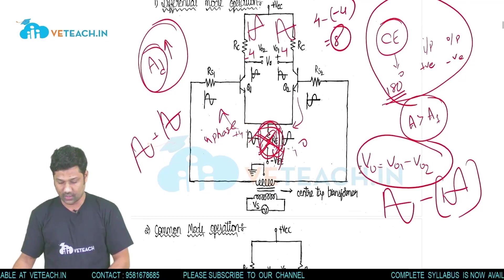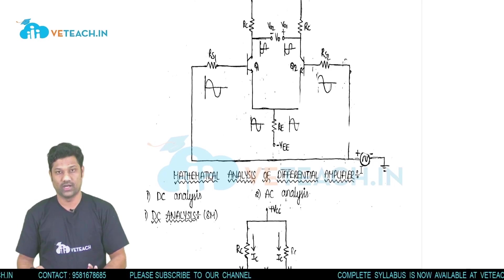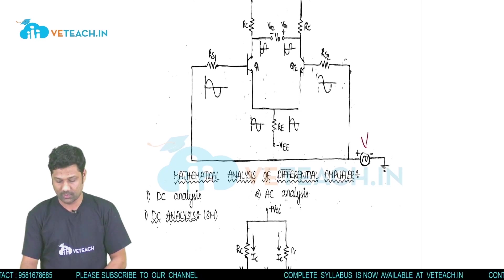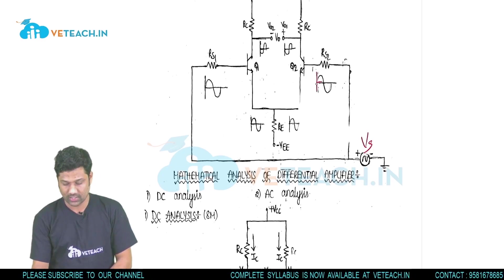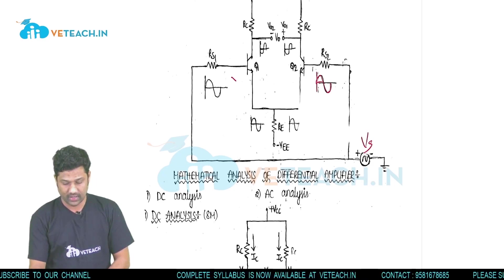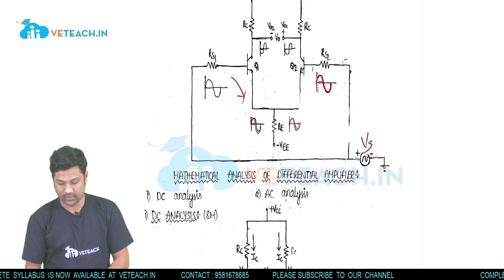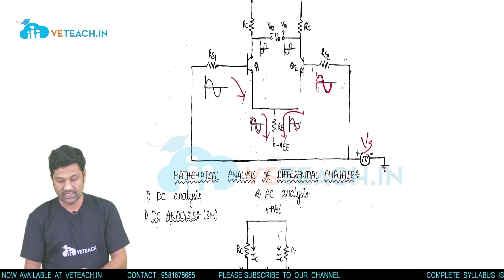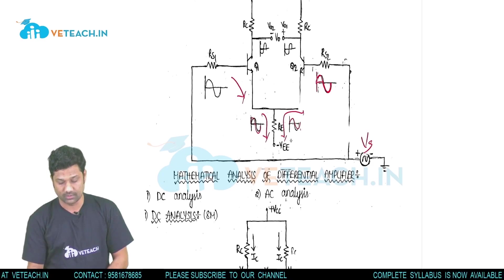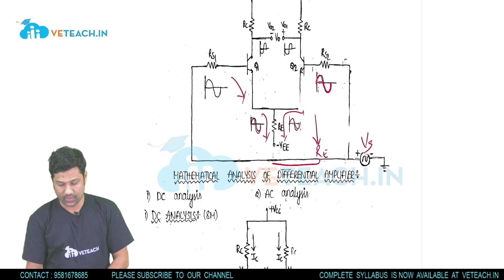Now for common mode operation: we provide the same input to both transistors, so the same positive-negative going signal Vs is applied to both. When we look at RE, there is no phase shift between base and emitter, so both emitters see the same positive-negative going signal. Both emitter signals flow in the same direction and add up — positive adds with positive and negative adds with negative.